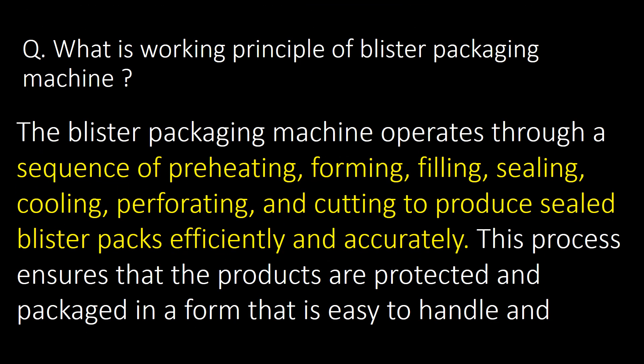What is the working principle of a blister packaging machine? The blister packaging machine operates through a sequence of pre-heating, forming, filling, sealing, cooling, perforating, and cutting to produce sealed blister packs efficiently and accurately.